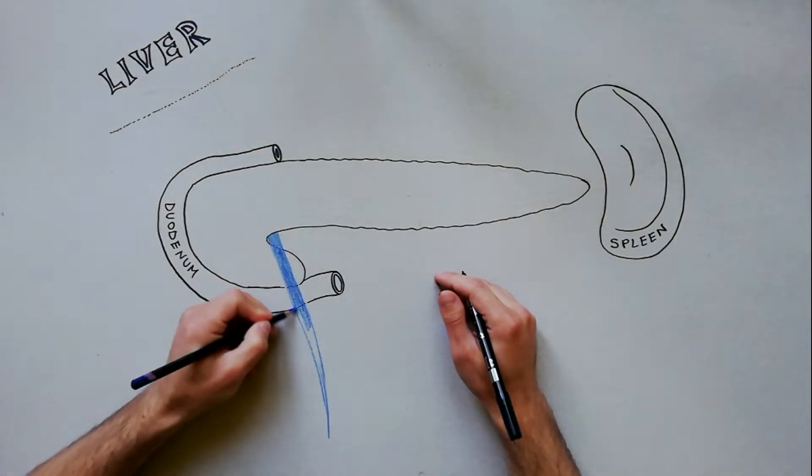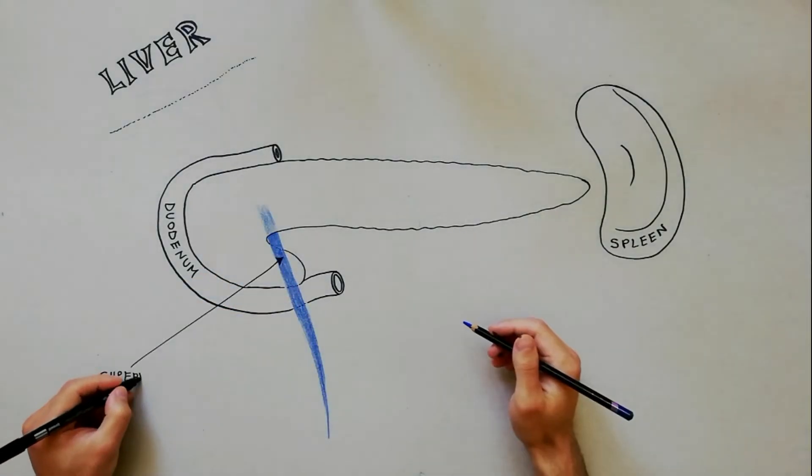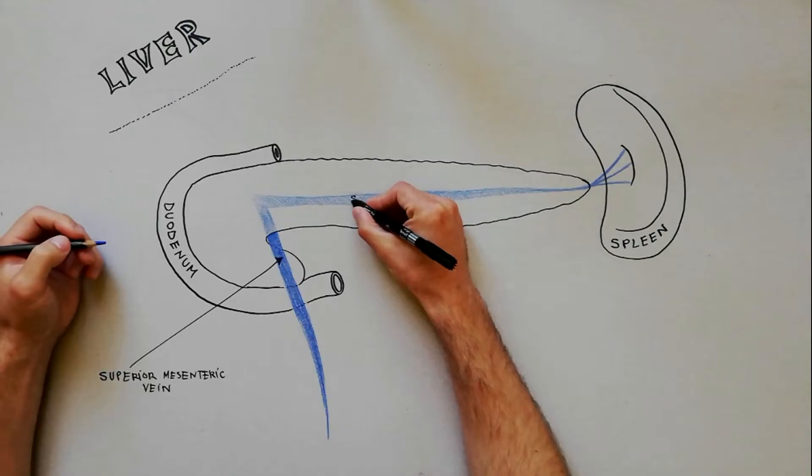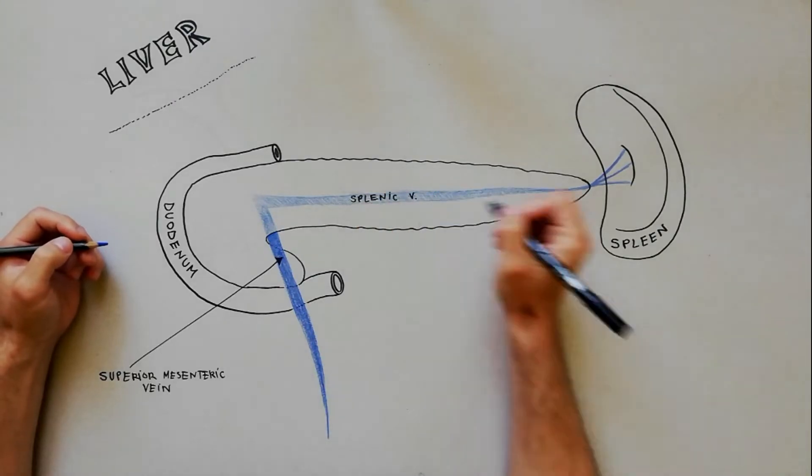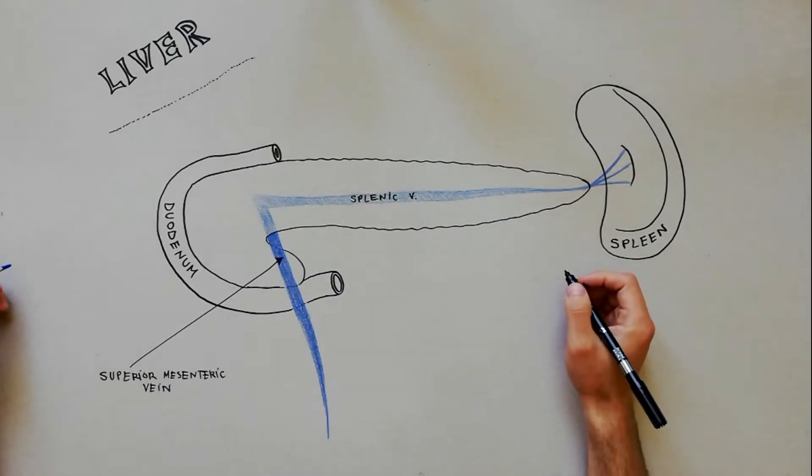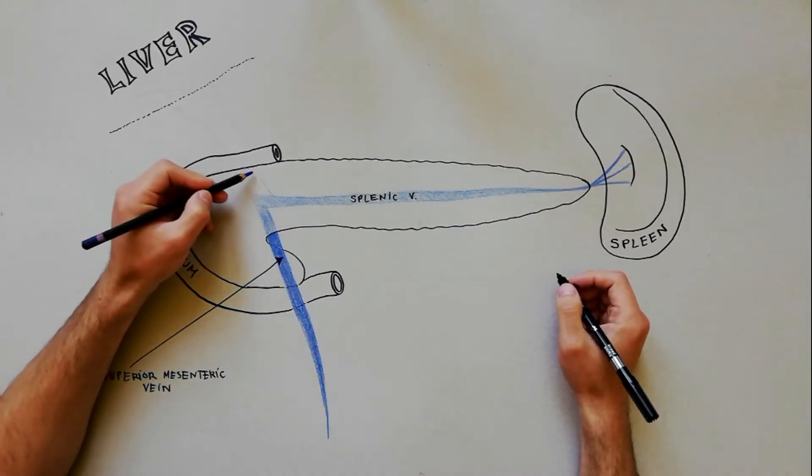The portal vein is formed by the junction of the superior mesenteric vein and the splenic vein behind the neck of the pancreas, these two veins joining at approximately a right angle.